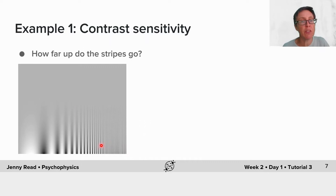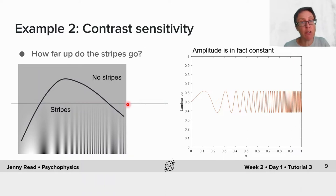In terms of level of detail, that's typically quantified with the contrast sensitivity function. You may have seen diagrams like this where you ask yourself, how far up did the stripes go? For me, the answer would be something like that. And that's a way of eyeballing your own contrast sensitivity function.